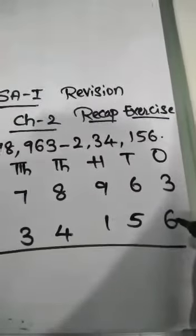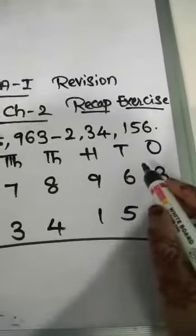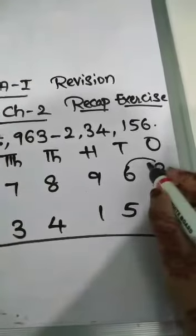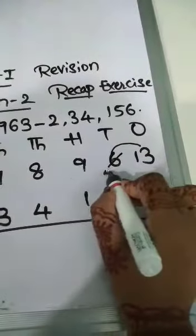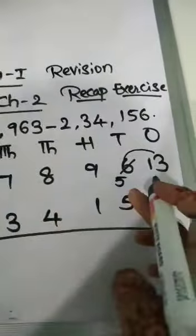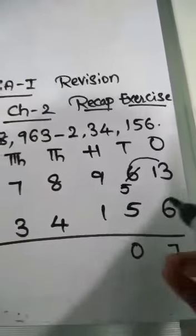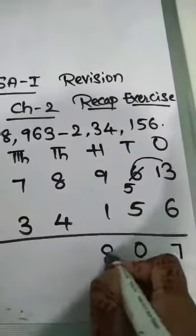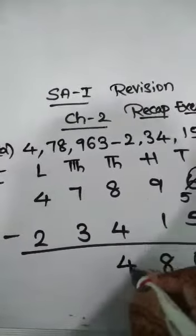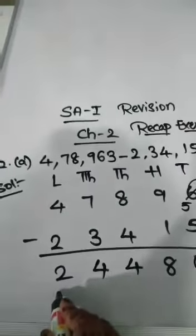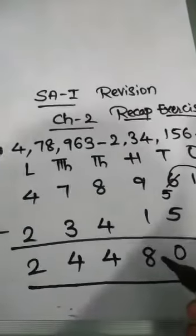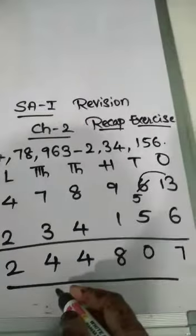3 minus 6 — we cannot subtract, so we have to take borrow. So after taking borrow from 6, it will become 13. So 13 minus 6 is 7. Now this 6 becomes 5. So 5 minus 5 is 0. Next 9 minus 1 is 8. 8 minus 4 is 4. 7 minus 3 is 4. 4 minus 2 is 2. So the answer is 2,44,807.